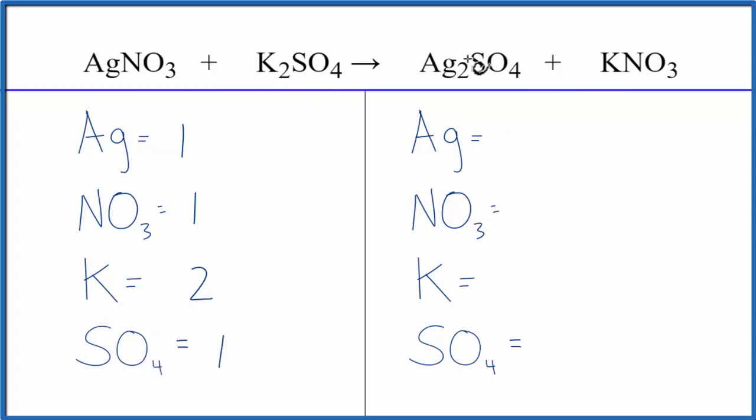On the product side, two silvers, one nitrate, one potassium, and then one sulfate, one SO4. Okay, so we're ready to balance here.